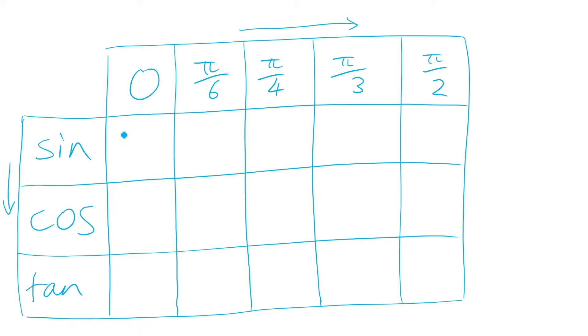So we can quickly fill this in. Just go 0, 1, 2, 3, 4 in there, square root everything, and then divide everything by 2.